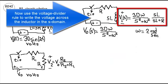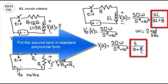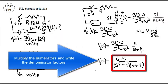Now use the voltage divider rule to write the voltage across the inductor in the S-domain. Put the second term in standard polynomial form. Multiply the numerators and write the denominator factors.